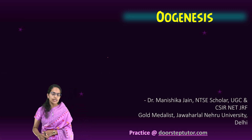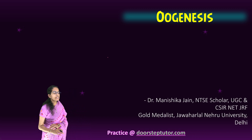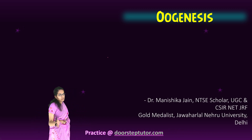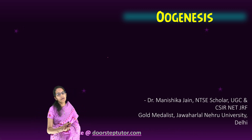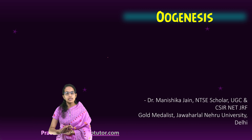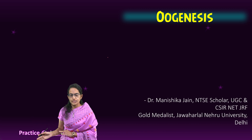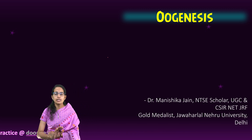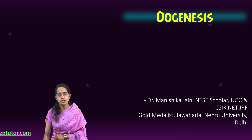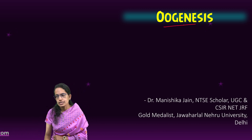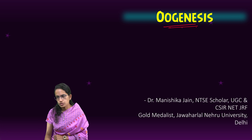Under gametogenesis, as we said, there are two processes. One is spermatogenesis, the other is oogenesis. Spermatogenesis is the process of formation of sperm. Oogenesis is the process of formation of ovum.